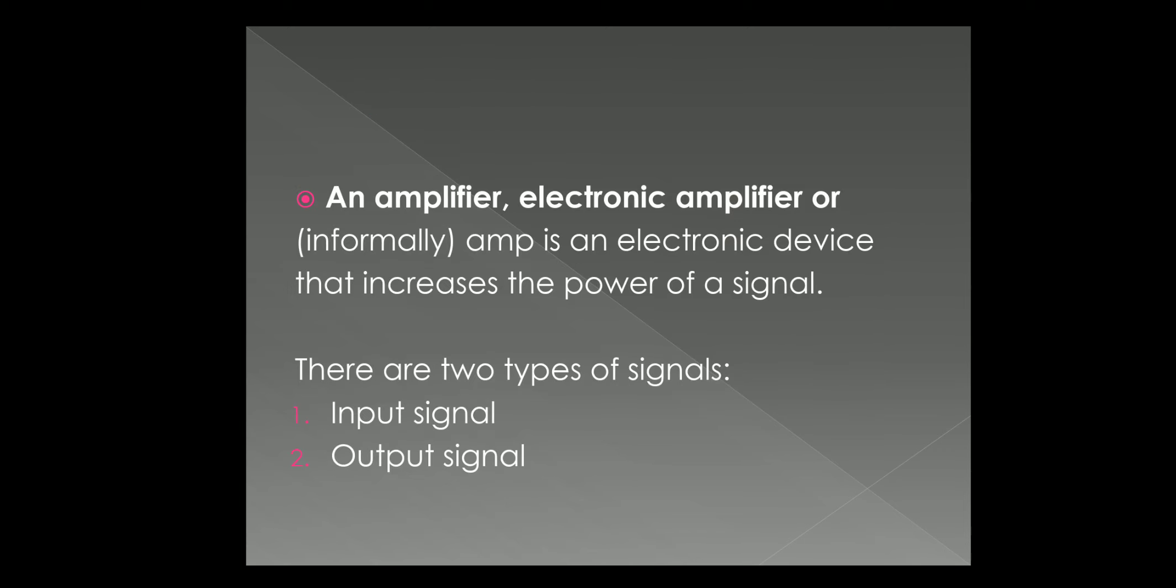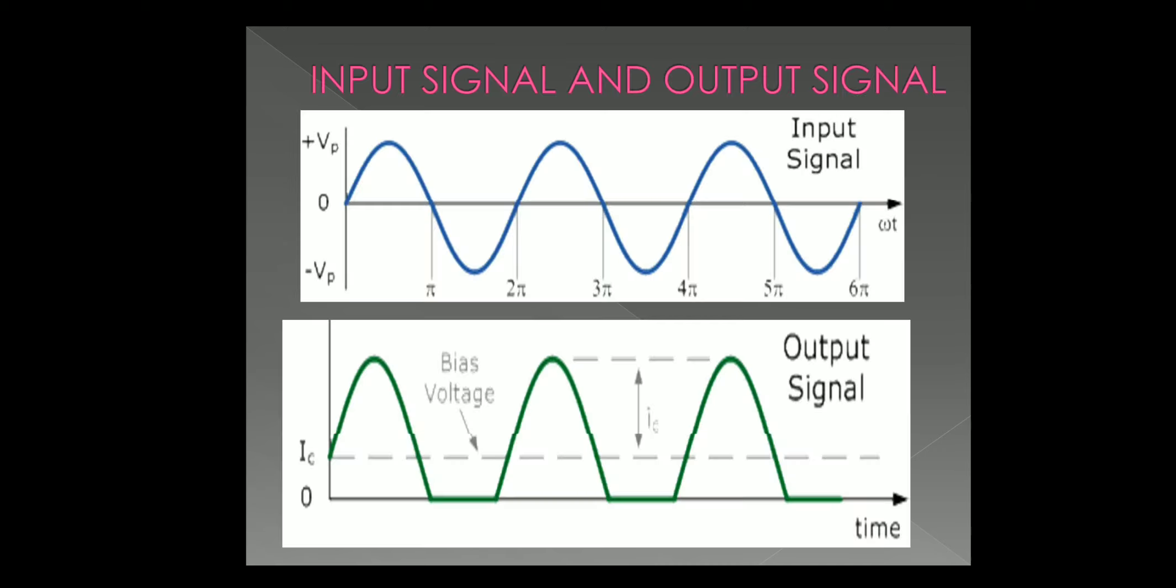An amplifier is an electronic device that increases the power of a signal. There are two types of signals. The first one is input signal. It is a signal which goes inside an electronic system.